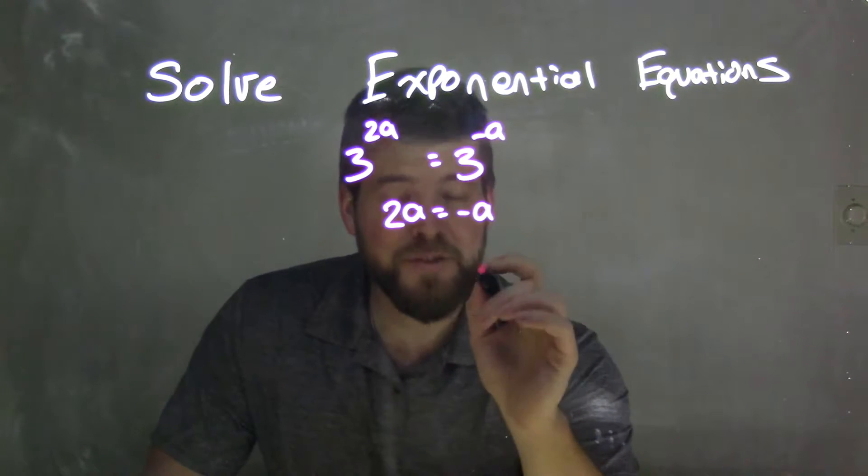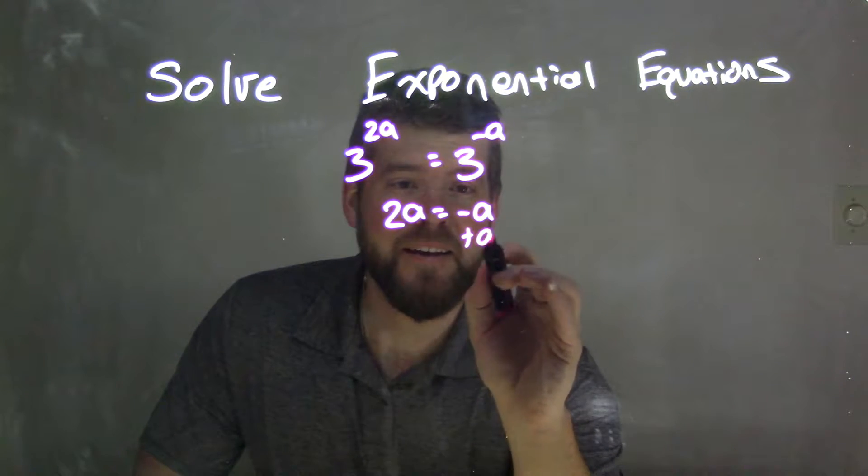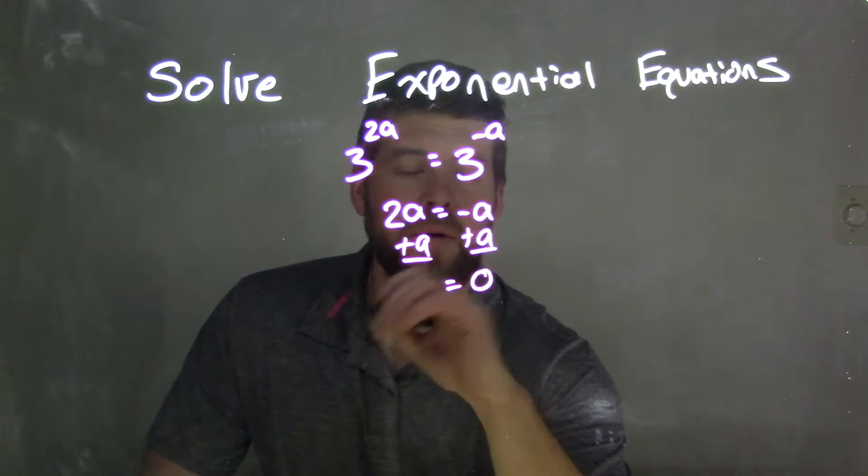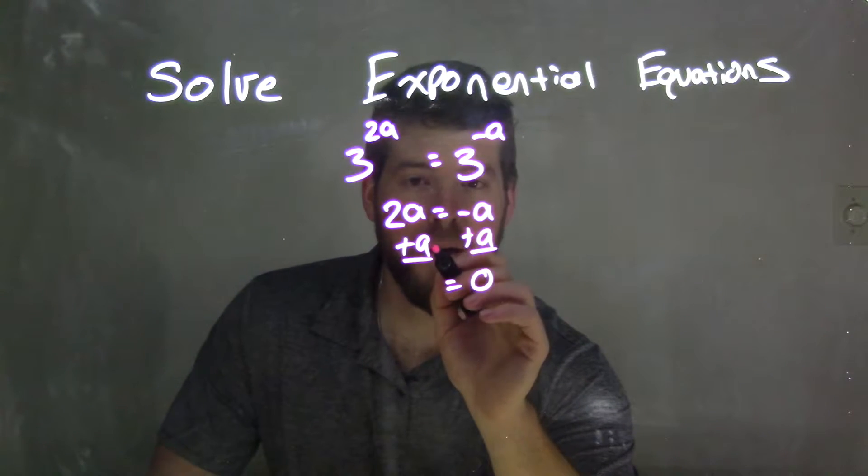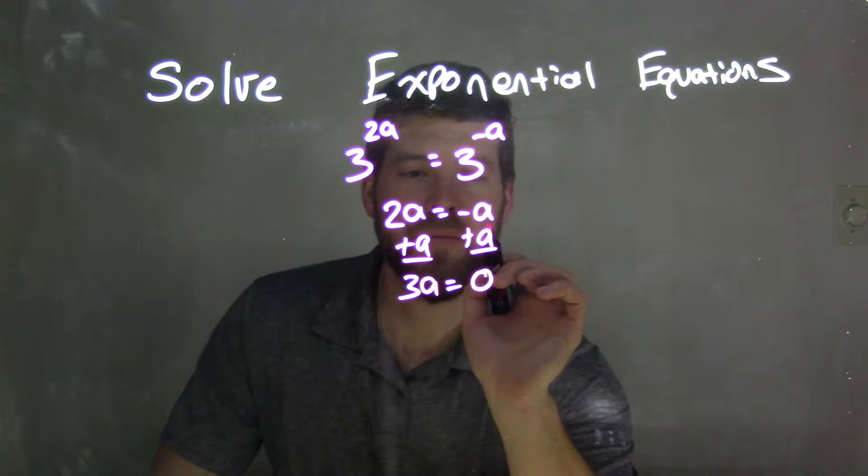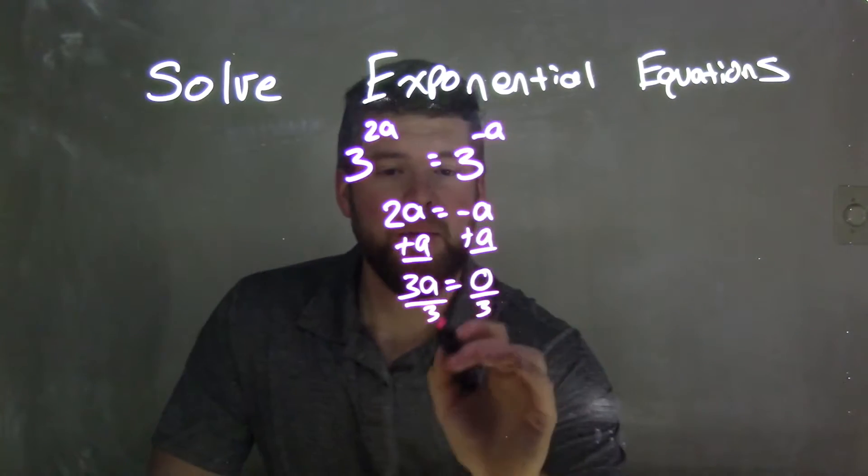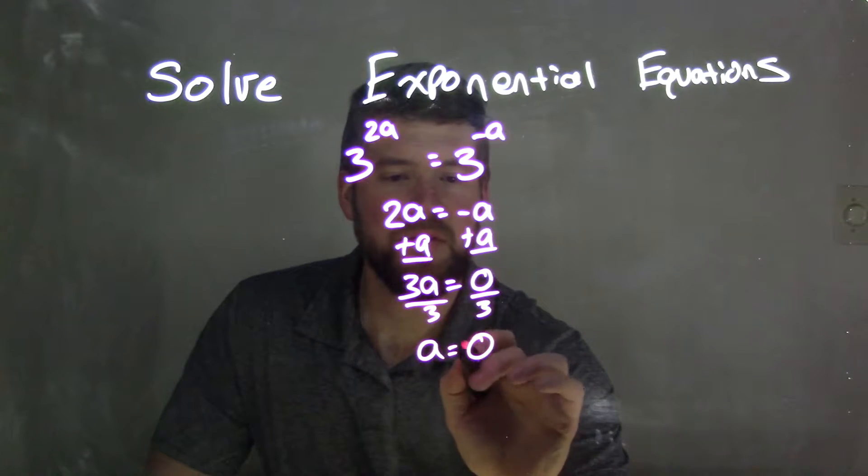Well what we need to do is actually add an a to both sides. So we are left with a zero here on the right and a 2a plus a which is 3a. Then we can divide by 3 to both sides and we're left with a equals 0.